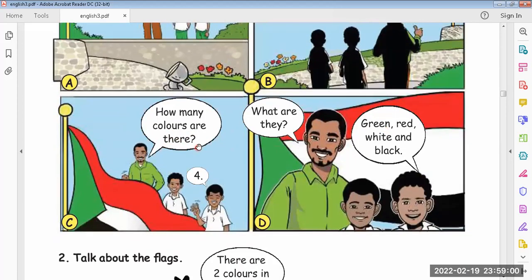How many colors are there? 4. 1, 2, 3, 4. Let us count it. 1, 2, 3, 4.